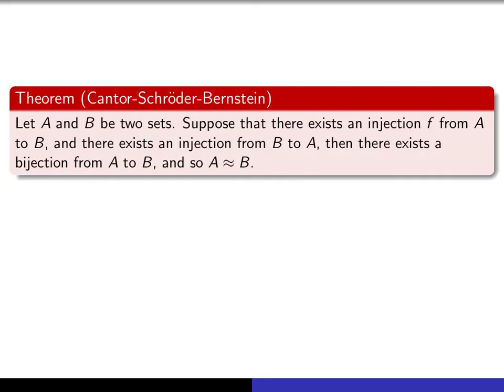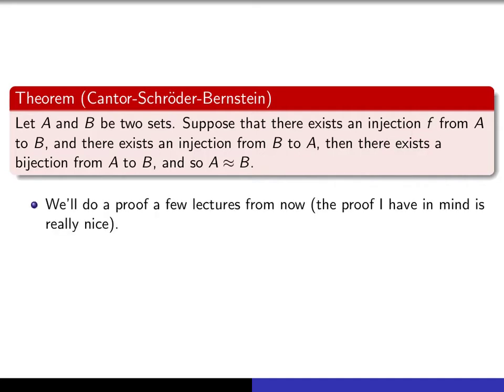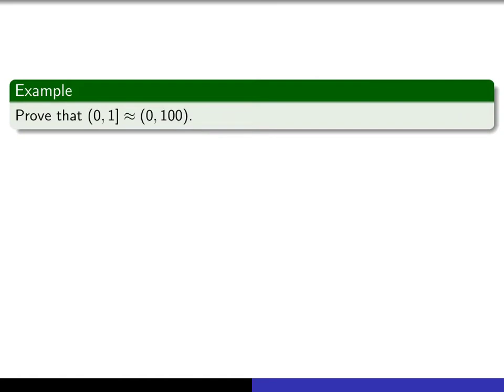So it's telling you that if you can do that in both directions, then you automatically know that there exists a bijection. It doesn't tell you how to find the bijection, but it tells you that it guarantees that it exists. So I'll show you a nice proof of this a few lectures from now, but for now, let's just simply look at some applications of it. So let's use the theorem to prove that the left-open right-closed interval (0,1] has the same cardinality as the open interval (0,100).